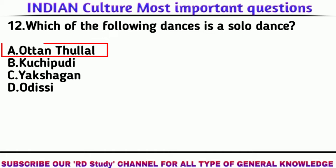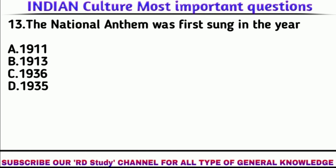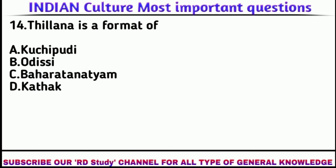Question 12: Which of the following dances is a solo dance? Answer: Ottamthullal. Question 13: The national anthem was first sung in which year? Answer: 1911. Question 14: Tillana is a format of? Answer: Bharatanatyam.